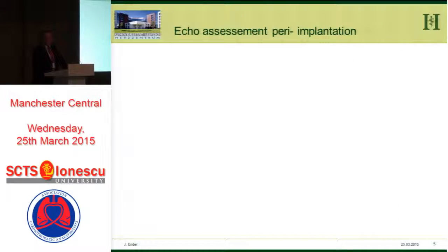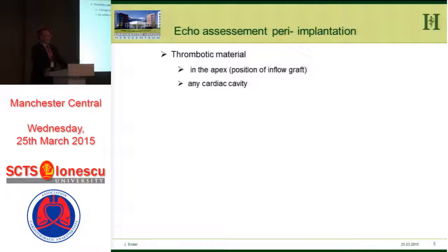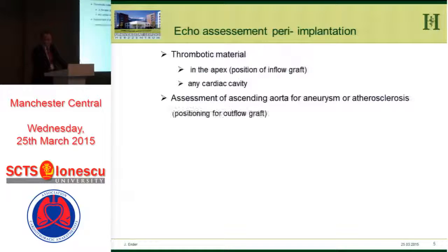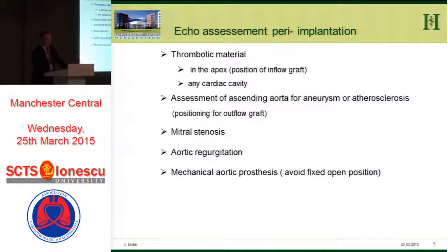What do we have to assess with echo? Pre-implantation or after implantation on the ICU, we have to look for thrombotic material whenever something goes wrong — in the apex, which is most important for the position of the inflow graft, or in any cardiac cavity if there is a pump flow disturbance. We have to assess the ascending aorta for aneurysm or atherosclerosis for positioning of the outflow graft, look for mitral stenosis, and look for aortic regurgitation.